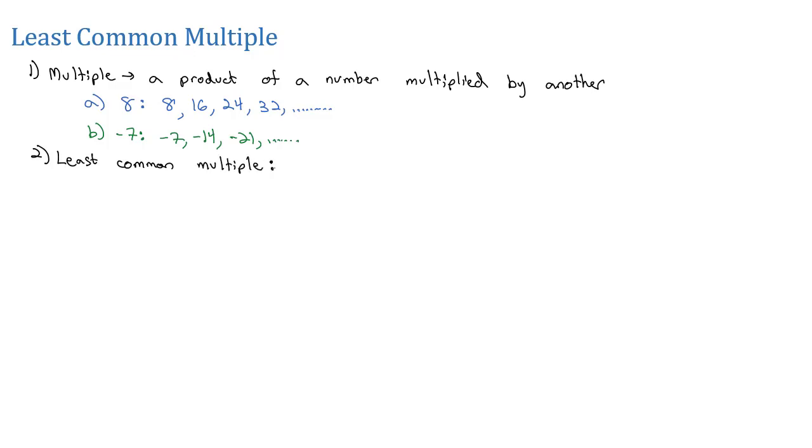The least common multiple of two numbers, or three or four numbers, is the smallest multiple several numbers share.